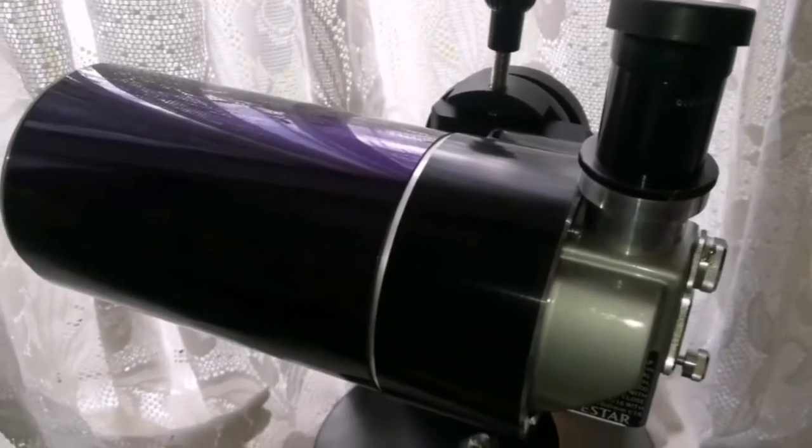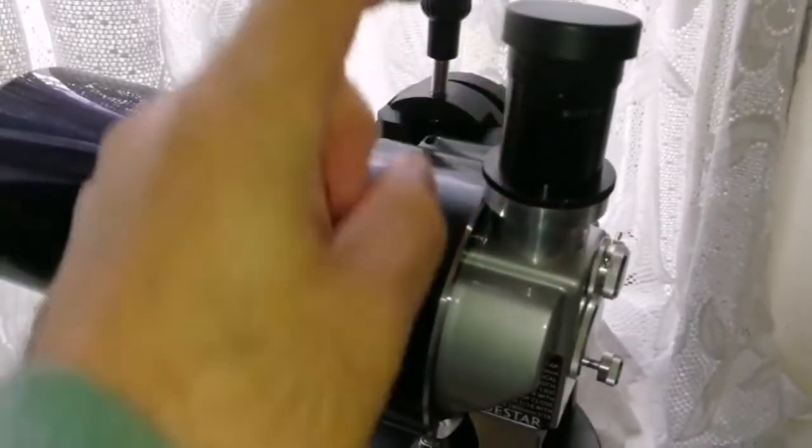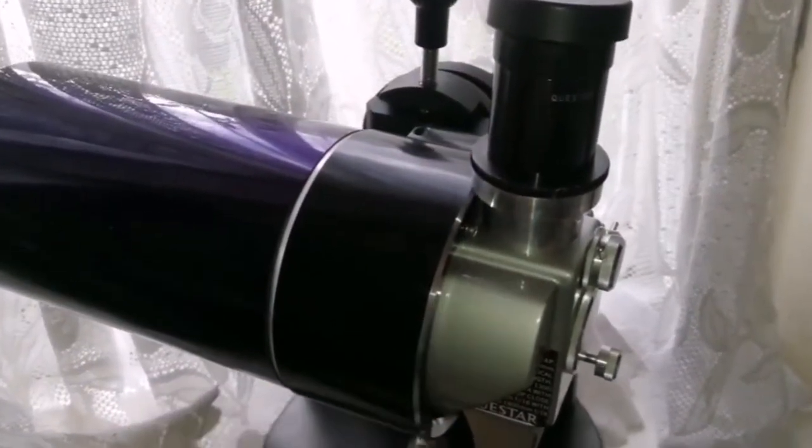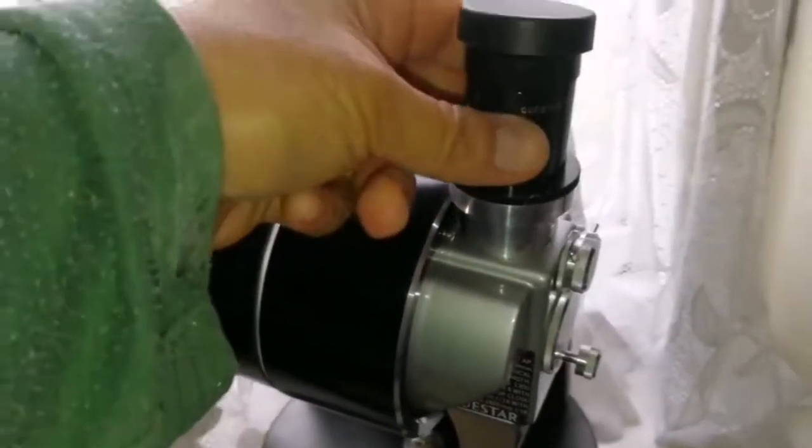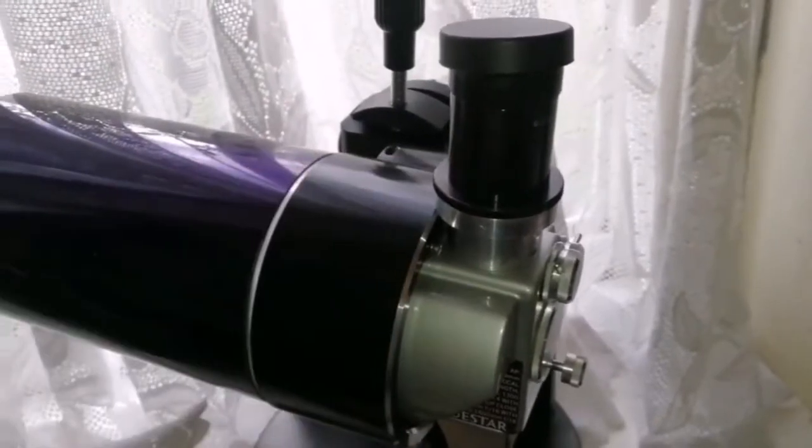As you know, Questar and all the Questars, including this field model, they don't accept one and a quarter inch eyepieces. The eyepieces are actually screwed ones, so you have to screw it into the base. So I'm trying to get an adapter for that.